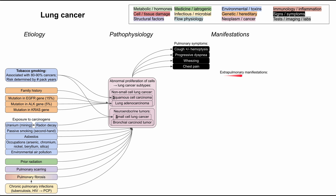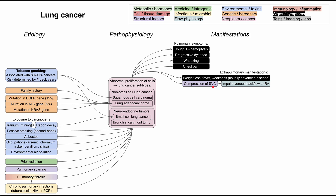There are also extra-pulmonary manifestations. This includes manifestations common to many cancers: weight loss, fever, and weakness, which usually signal advanced disease. If the lung cancer gets big enough to have a mass effect on the SVC — the superior vena cava — it can impair venous backflow to the right atria, resulting in SVC syndrome with venous congestion in the head, neck, and upper extremities, causing swelling in those areas.